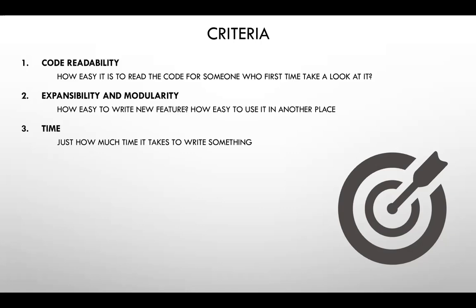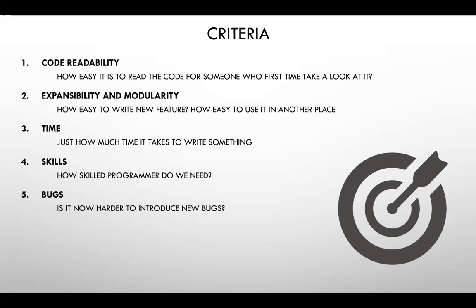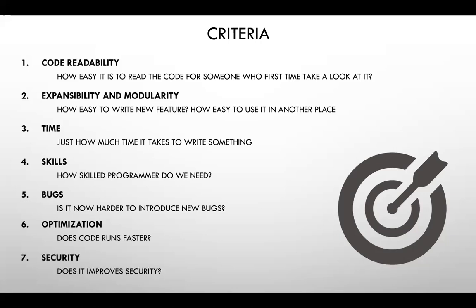Third: time — simply how much time it will take to write the application using this approach. Fourth: skill level required — does a team of juniors and one senior suffice, or do we need only seniors? These two are connected to cost — how much it will cost to deliver the application. Also: bugs — how easy is it to introduce new bugs — and optimization — will the application run faster or slower.